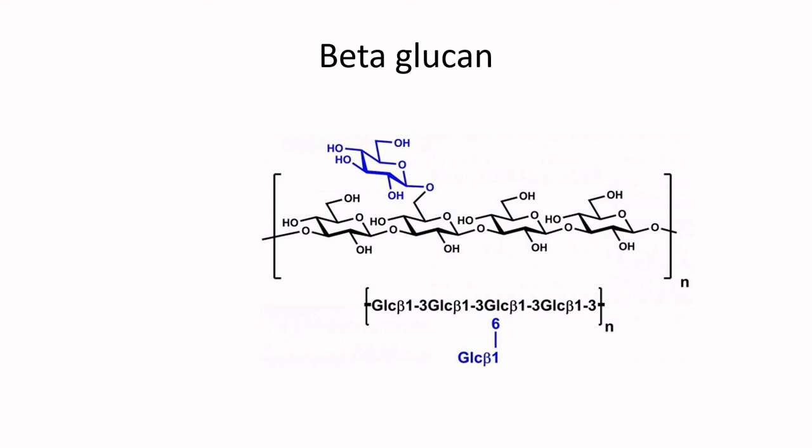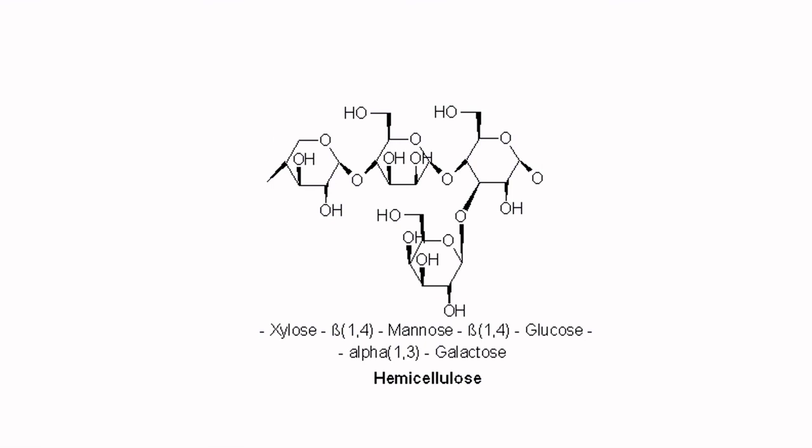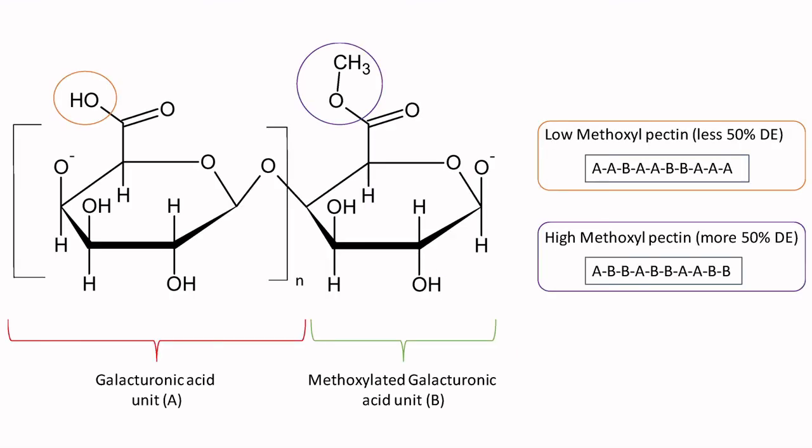Hemicellulose is interesting — it's not cellulose. Cellulose is a polymer of just glucose, whereas hemicellulose in many cases can involve all sorts of different sugars. Here we've got xylose, mannose, glucose, and galactose in a structure, and there are all sorts of different hemicellulose structures. One last one here is pectin — this looks like sugar but it's actually galacturonic acid. Many of the organic acids out there are the fermentation products of sugar.